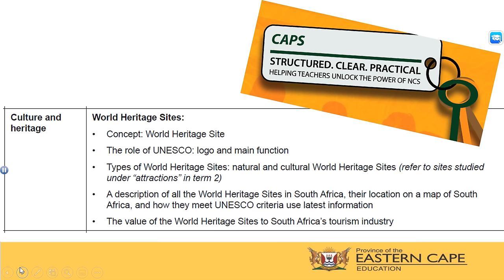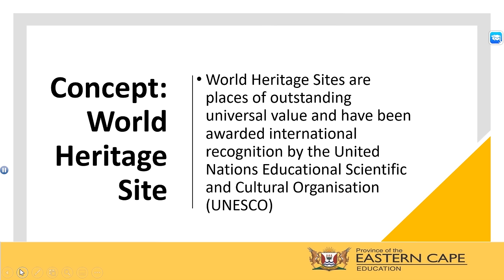The third bullet on your screen contains three subsections. First is a description of the World Heritage Sites in South Africa, their location on a map, and how they meet UNESCO criteria. We will be doing the second subsection in today's lesson — the location of the World Heritage Sites in South Africa on a map. The description of the World Heritage Sites and how they meet UNESCO criteria will come up in part two of this lesson. And thereafter, we will take a look at the value of World Heritage Sites to South Africa's tourism industry.